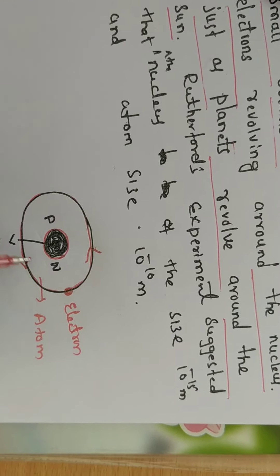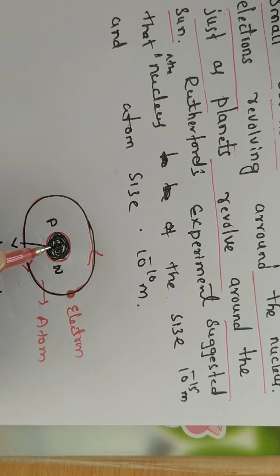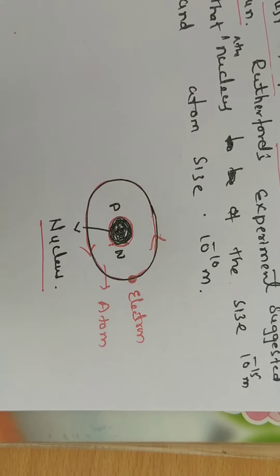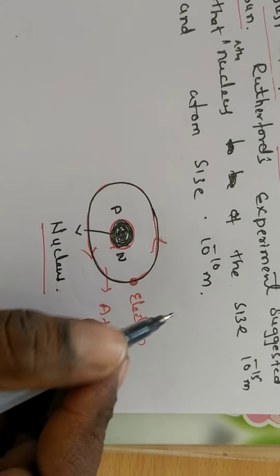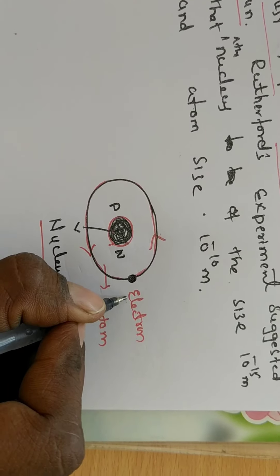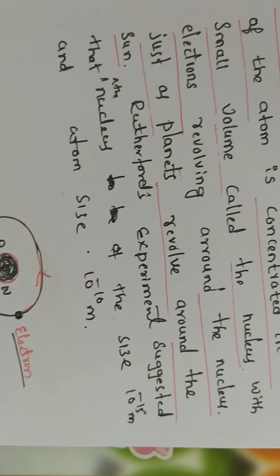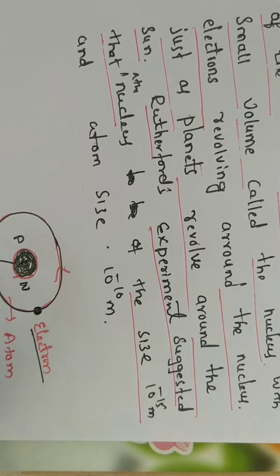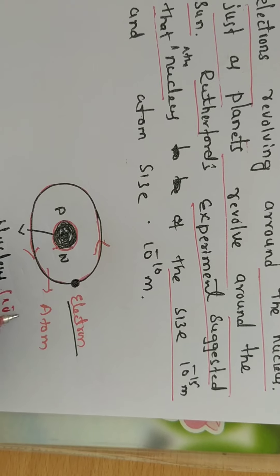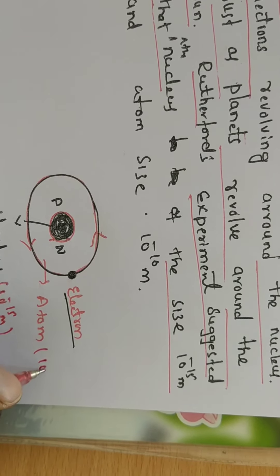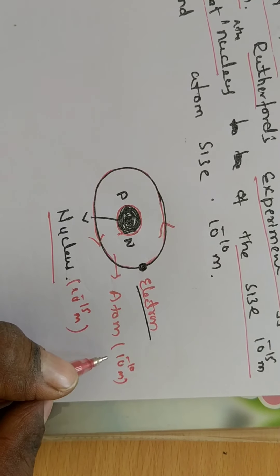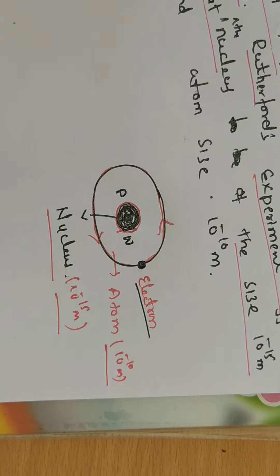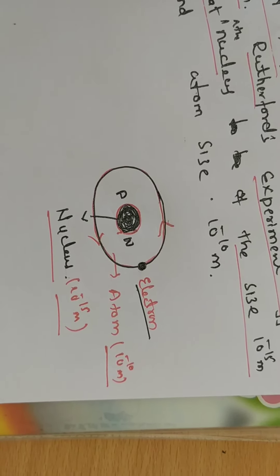Most of the space in an atom is completely empty. The total charge and total mass of the atom are concentrated at the center, which is called the nucleus. The electron, which carries a negative charge, revolves around the nucleus. The Rutherford experiment suggests that the size of the nucleus is 10 to the power of minus 15 meter — called a Fermi — and the size of the atom is 10 to the power of minus 10 meter — called an Angstrom. This completes the description of the Rutherford atomic model.